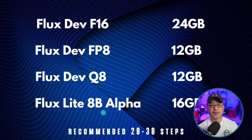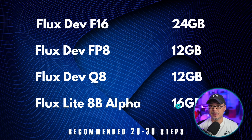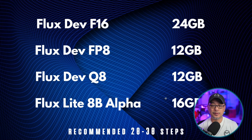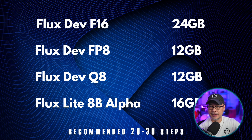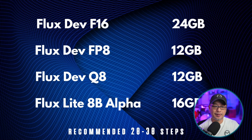With Flux Lite 8B Alpha, the file size is 16GB. So if you add 9GB for the T5 encoder, we're at 25GB. Their goal is to get it under 24GB.